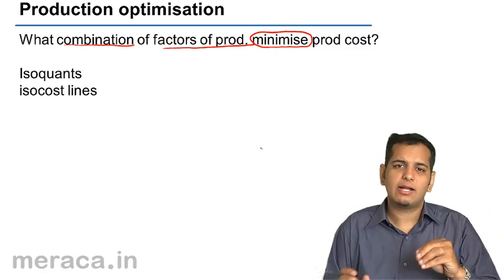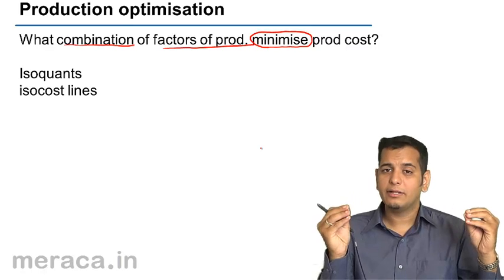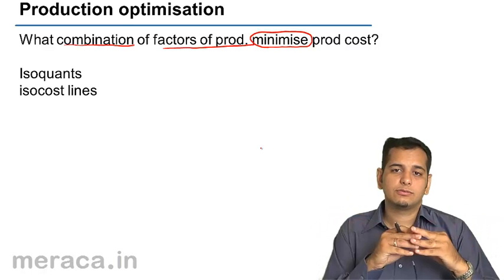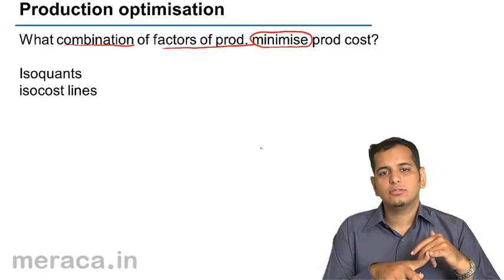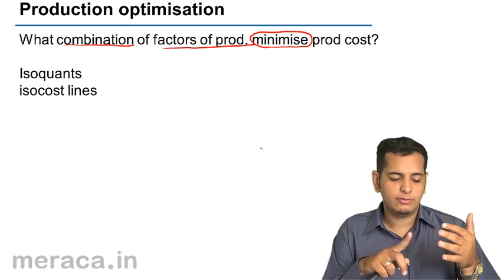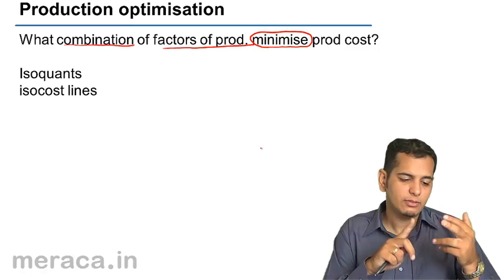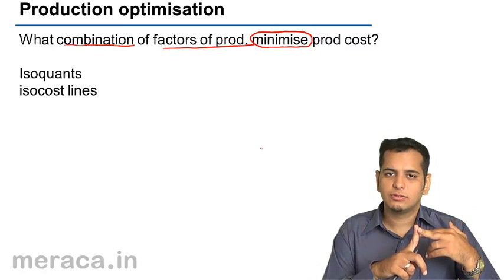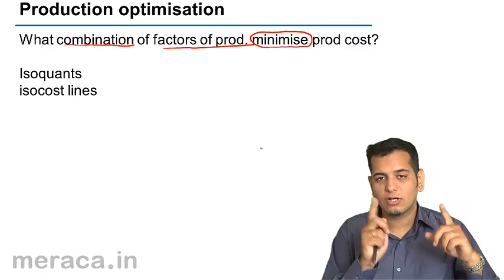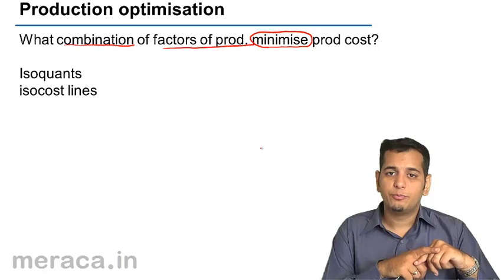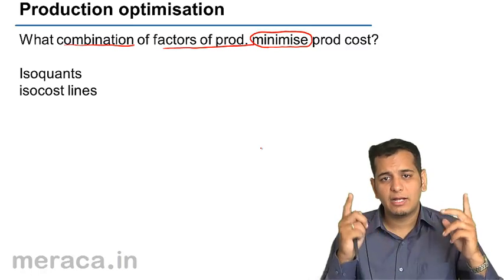Please understand that all factors of production are employed at a cost. Land comes at a cost — you pay rent for it. Labor comes at a cost — you pay wages or salaries for it. Capital comes at a cost — you pay interest for it. And the risk-taking ability also comes at a cost — you pay profit for it. So all the factors of production come at a cost.